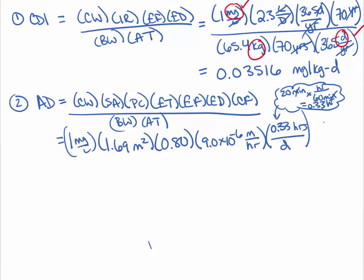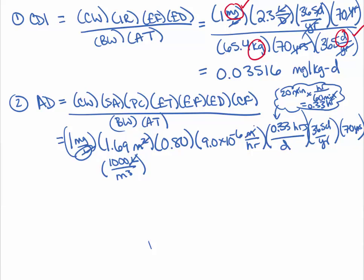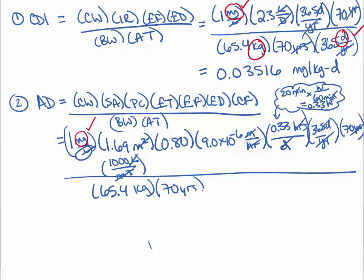She bathes 365 days per year for 70 years. There is a unit issue: we have liters in the denominator and meters squared times meters gives meters cubed. To cancel, we use the conversion of 1,000 liters per meter cubed. After cancellation, liters, meter cubed, hours, days, and years all cancel, leaving milligrams in the numerator. We then divide by the female body weight and the averaging time of 70 years, converting using 365 days per year.